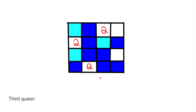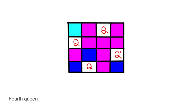Next we try to fit the third queen. Our candidates are more limited because of the second queen's column, row, and diagonal. So our third queen can only go in one spot. Finally, we place the fourth queen — the third queen blocks its diagonal, row, and column, leaving one valid position. We've checked all constraints and found a valid solution to the N-Queens problem.